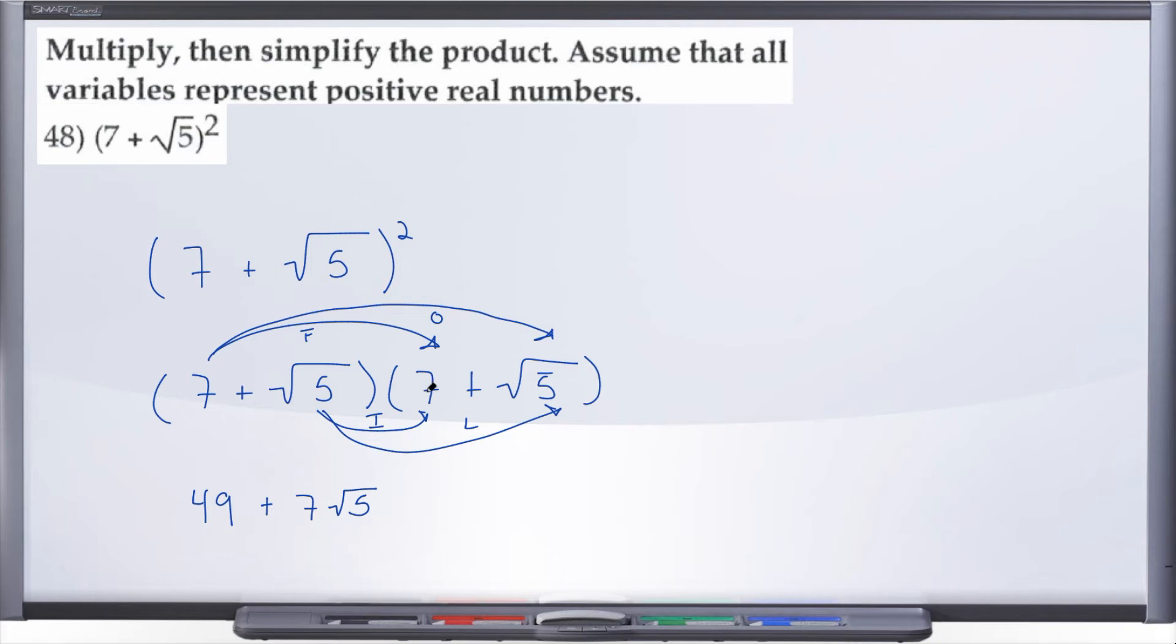And then radical 5 times 7 is going to be plus 7 radical 5, and then radical 5 times radical 5 is going to be plus radical 25.